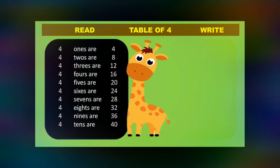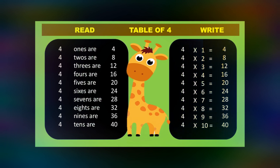Okay, let's repeat once again. 4 1s are 4. 4 2s are 8. 4 3s are 12. 4 4s are 16. 4 5s are 20. 4 6s are 24. 4 7s are 28. 4 8s are 32. 4 9s are 36. 4 10s are 40.